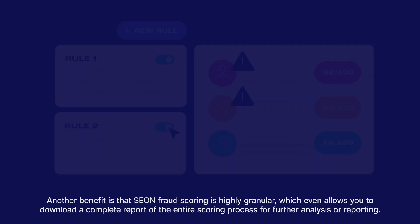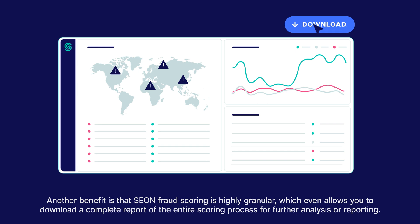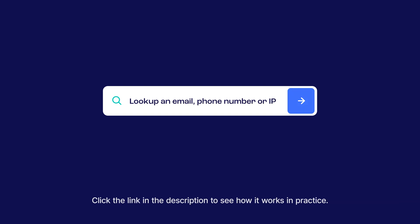Another benefit is that Sion fraud scoring is highly granular, which even allows you to download a complete report of the entire scoring process for further analysis or reporting. Why don't you test out your phone number or email address to see what Sion can tell you about it? Click the link in the description to see how it works in practice.